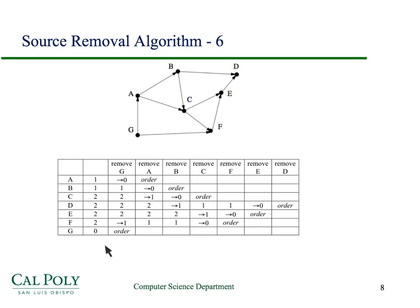Looking at the in-degrees, the only vertex with in-degree 0 is G, so we remove G and put it first in our topological ordering. When we remove G, the in-degree of A goes from 1 to 0, and the in-degree of F goes from 2 to 1. Then A is the only vertex with in-degree 0, so we put A into the ordering and traverse A's adjacency list — B and C — decrementing their in-degrees by 1 each.